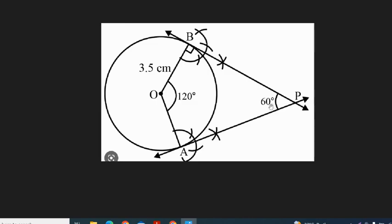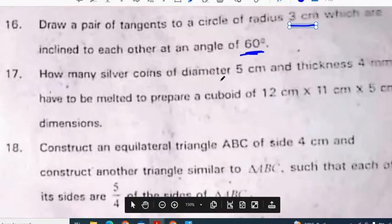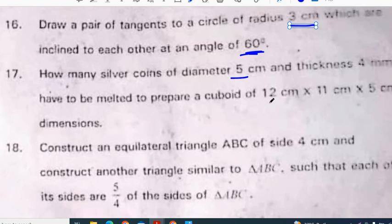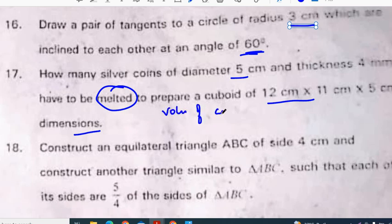How many silver coins of diameter 5 centimeters, thickness 4 millimeters have to be melted to prepare a cuboid of 12 cm × 11 cm × 5 cm dimensions? Whenever melted is there you need to use the formula for volume. Volume of cylinder will be equal to volume of cuboid. You will get the number of silver coins.